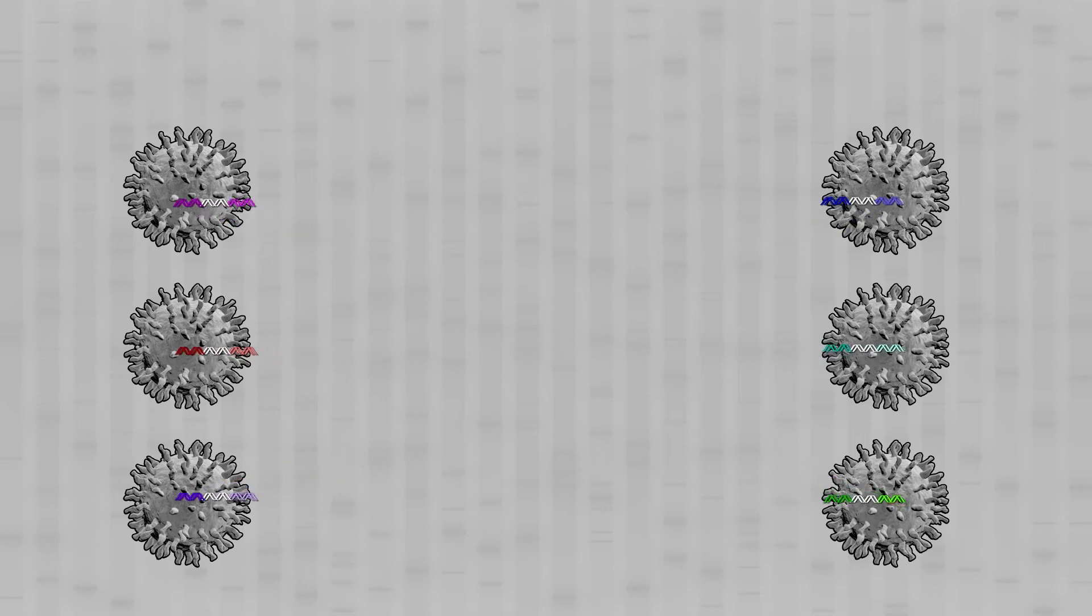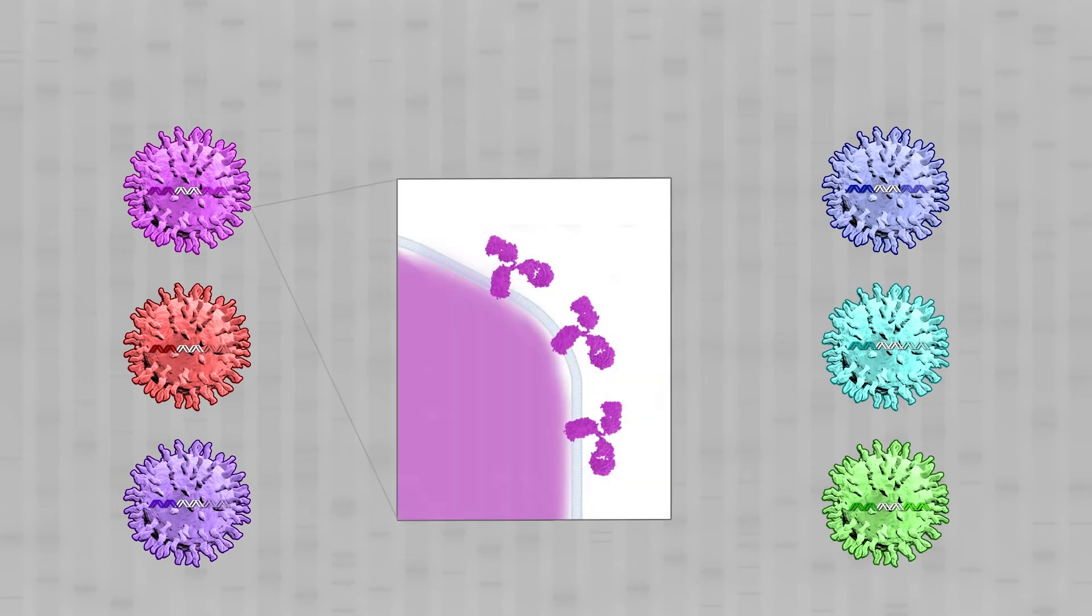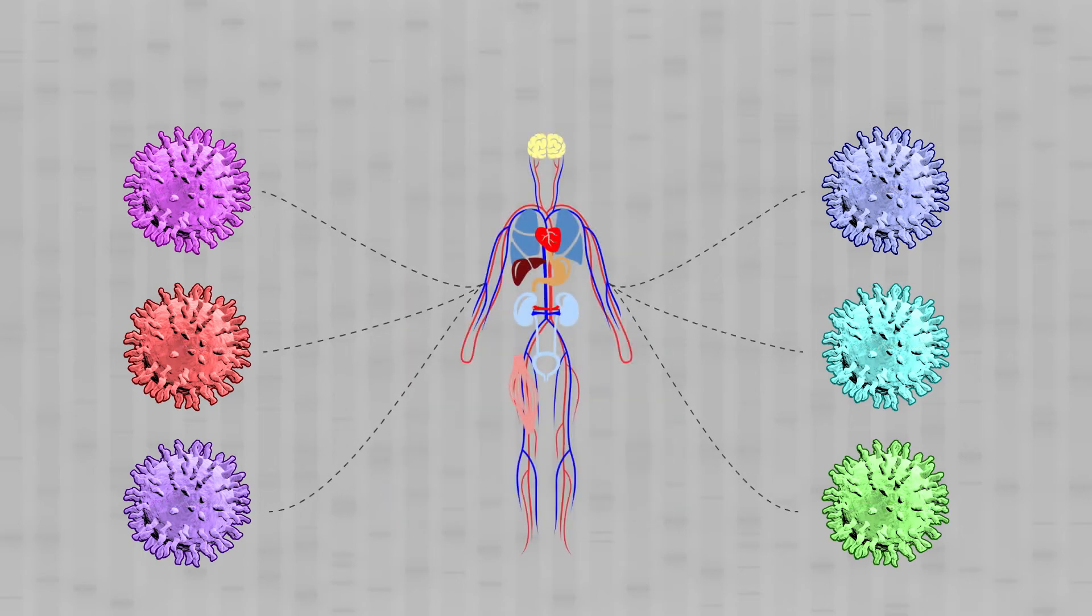They then modify cells of interest with these gene libraries such that each cell receives a different gene that expresses a different potential binding protein. That pool of uniquely modified cells is then screened in a disease model in vivo.